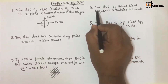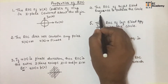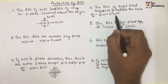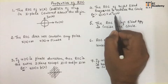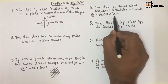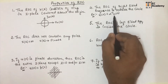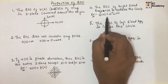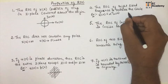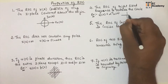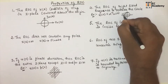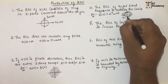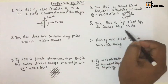The next property is the ROC of a right-sided sequence is outside the circle. For example, if you have X(n) equal to alpha to the power of n times U(n), this is a right-sided sequence. U(n) equals 1 for n from 0 to infinity. For a right-sided sequence, the ROC will be outside the circle, shown by shading the region outside the circle.